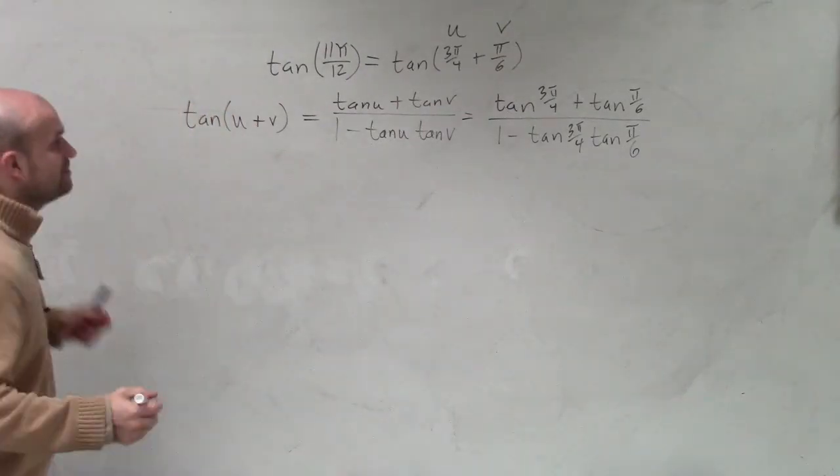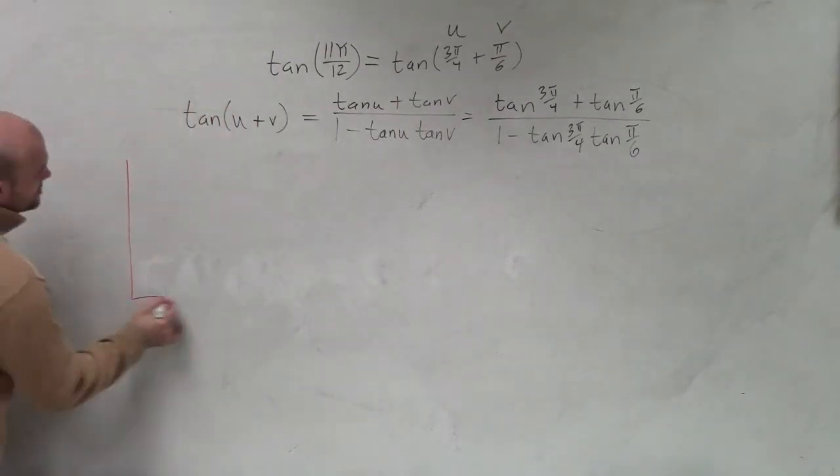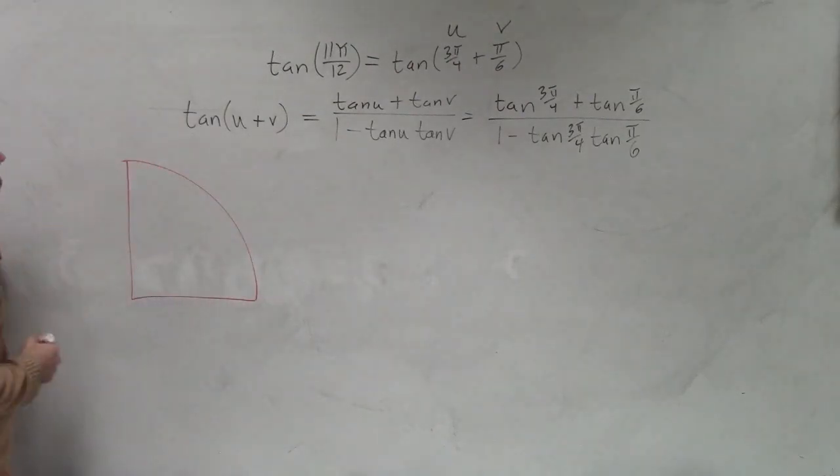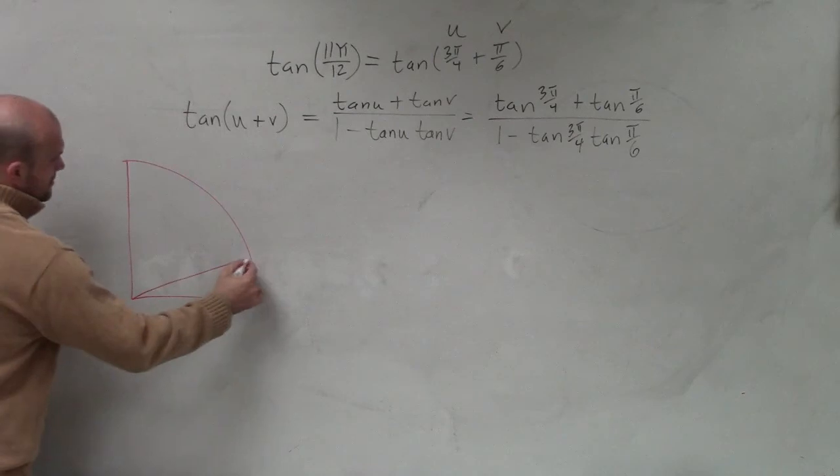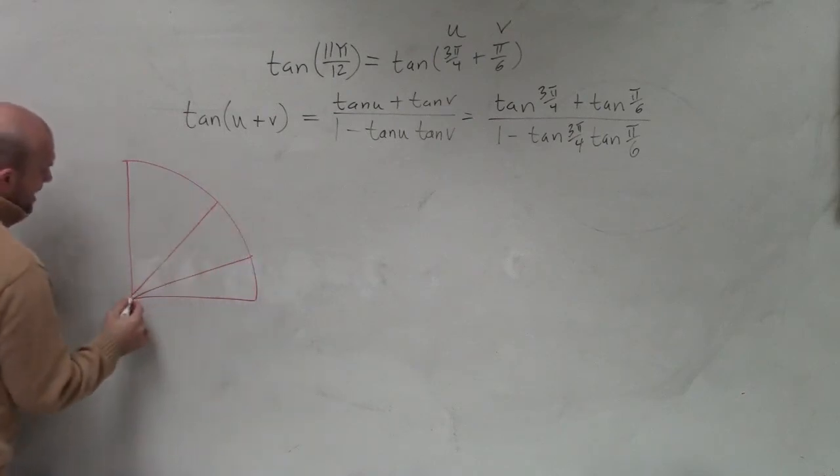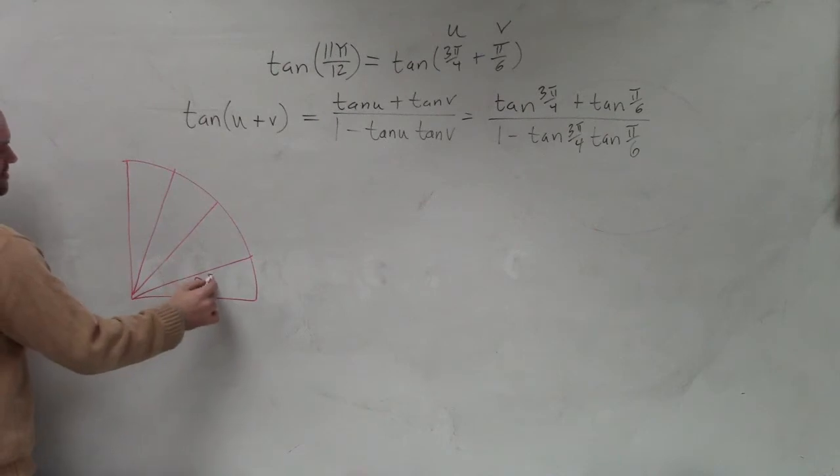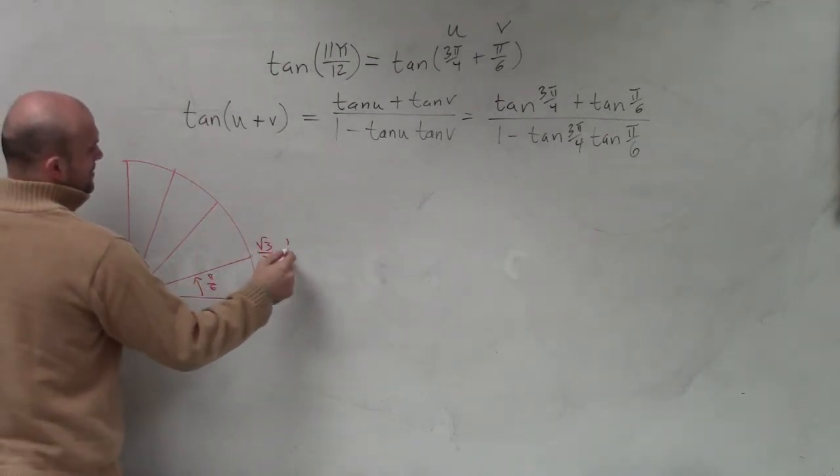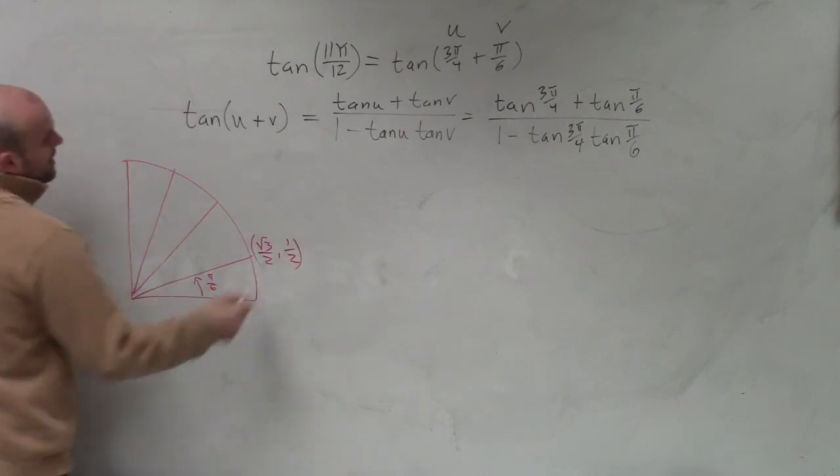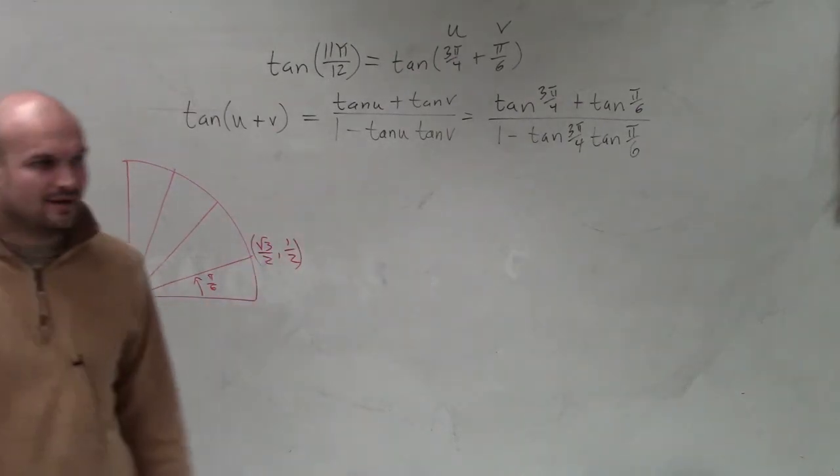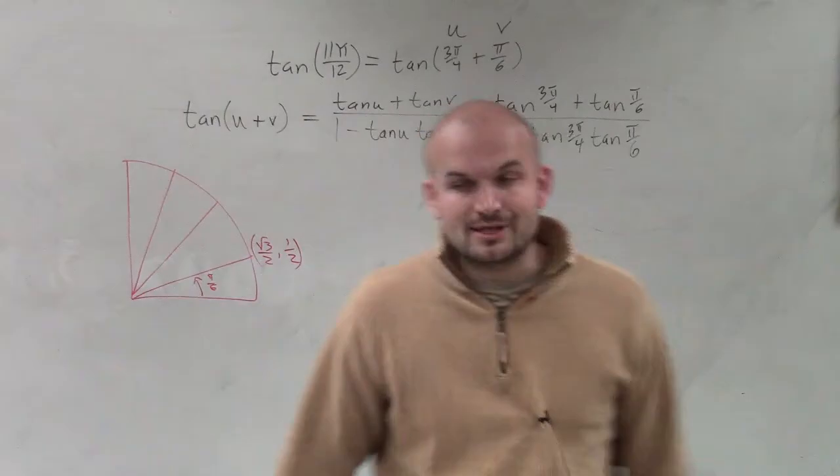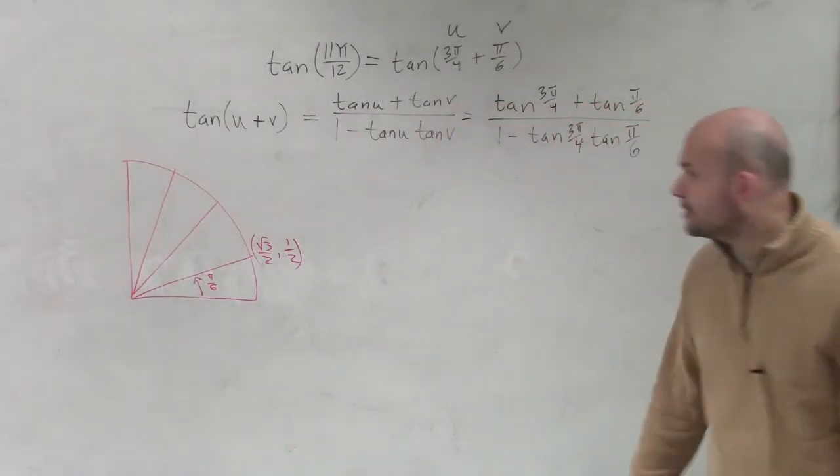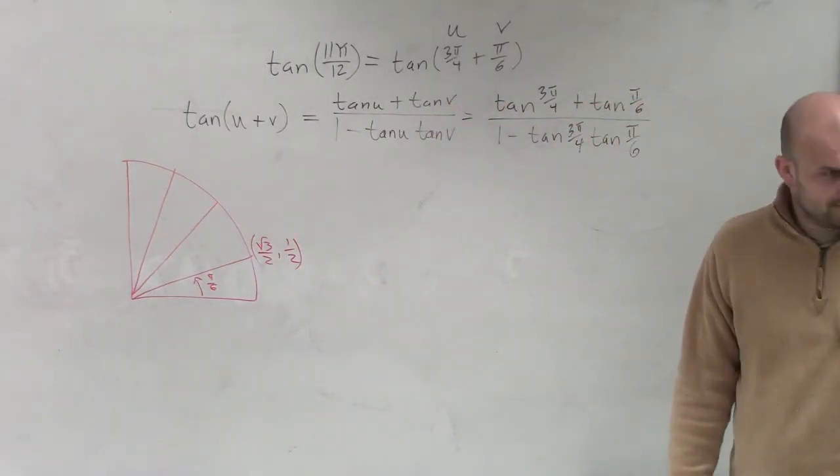The next thing we need to do is know our unit circle. So I'll look at the first quadrant. We have π over 6, π over 4, and π over 3. For π over 6, I know that point is going to be square root of 3 over 2 comma 1 half. At this point in the game, I would hope that we can look at that and say, I already know that's going to be square root of 3 over 3.